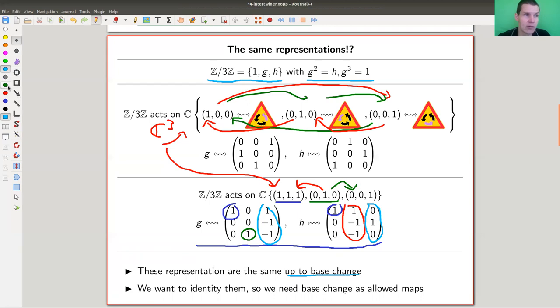So these representations are on the nose the same, up to base change. And the only thing, well, we want them to be the same. We know that they are the same. I just constructed them from the same being the same representation. I just can't tell by looking at the matrices because the matrices look different. So whatever notion of a map we want, it should take this base change into account, right. So we need to identify them. So base change should be part of maps between representations. And indeed, it will be just basically the definition, just a slightly more general version of base change.